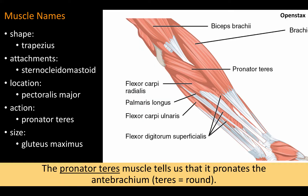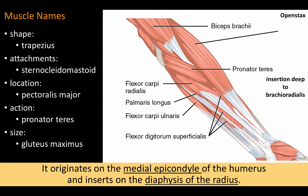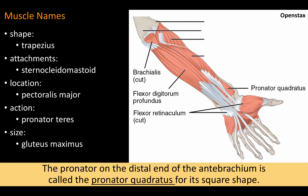The pronator teres muscle tells us that it pronates the antebrachium. Teres means round. It originates on the medial epicondyle of the humerus and inserts on the diaphysis of the radius. The pronator on the distal end of the antebrachium is called the pronator quadratus for its square shape.